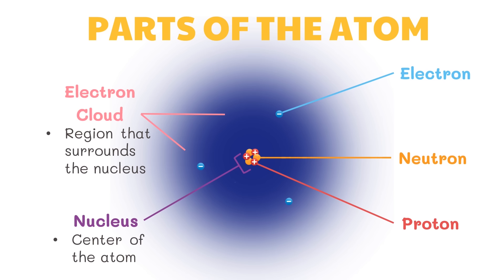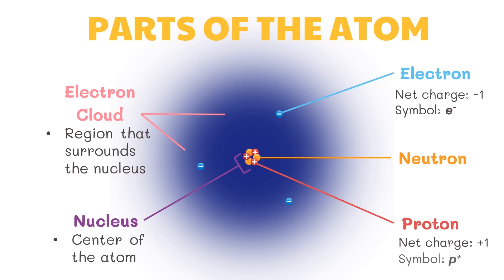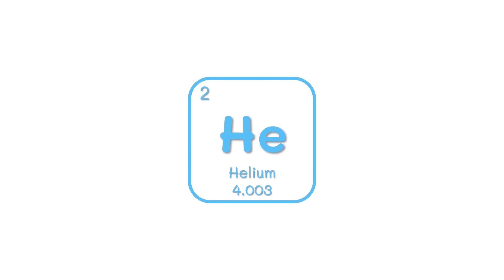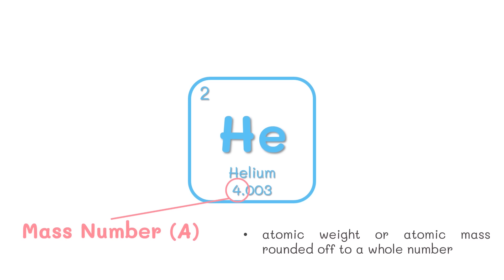A typical atom consists of three subatomic particles: protons, neutrons, and electrons. The electron is the lightest of the three; it carries a net charge of negative one and is represented by the symbol e with a negative superscript, located outside the nucleus. A proton carries one positive charge, represented by p with a positive superscript, and is located inside the nucleus. The neutron has no net electrical charge, represented by n with a zero superscript, and is also located inside the nucleus. The atomic mass is measured in atomic mass units.